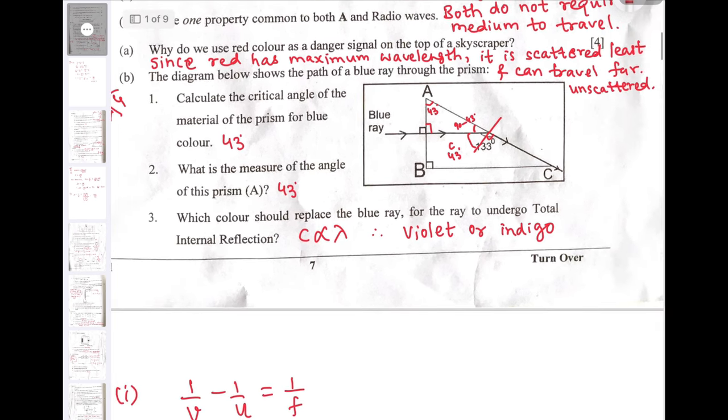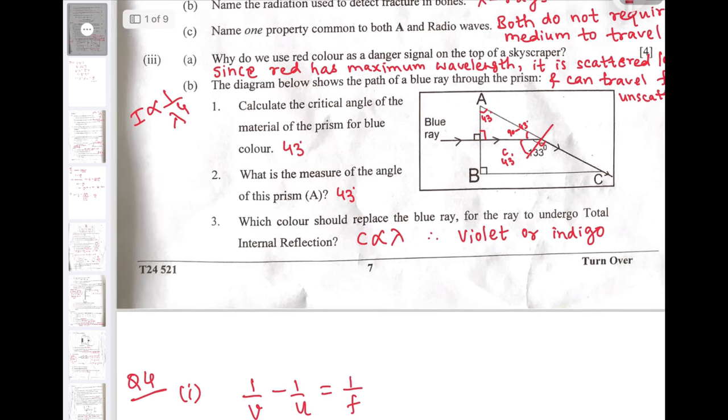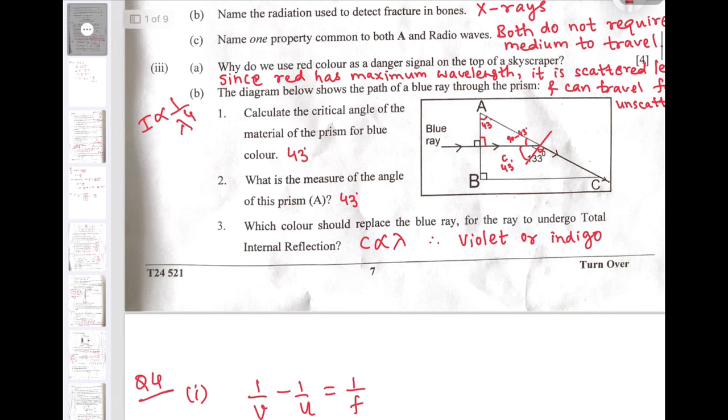Which color should replace the blue ray for the ray to undergo total internal reflection? The critical angle is directly proportional to the wavelength. Since blue color has critical angle 43, any color having critical angle less than 43 will undergo total internal reflection. There are two colors having wavelength less than the wavelength of blue: violet and indigo. So these two colors will undergo total internal reflection here.